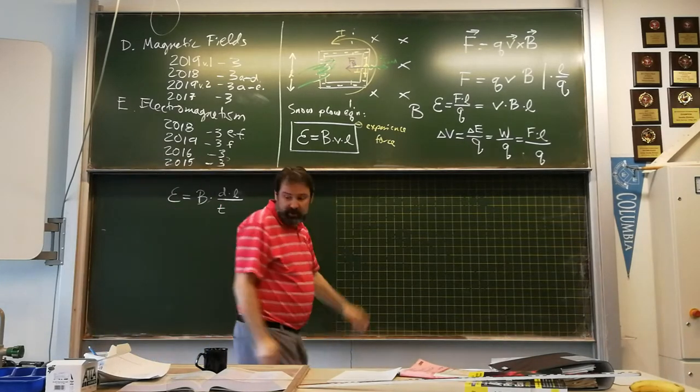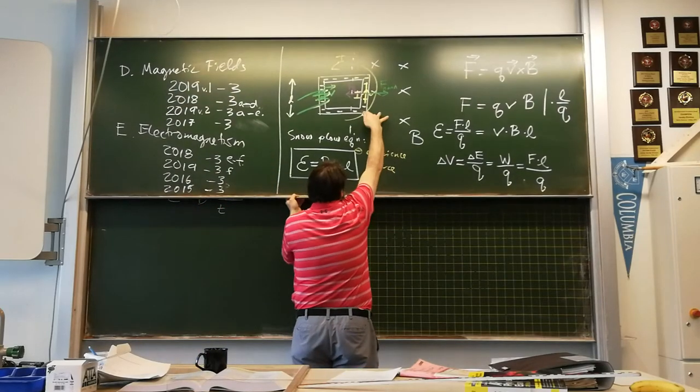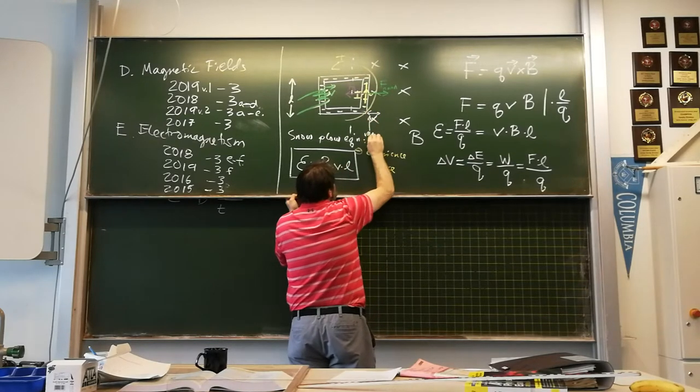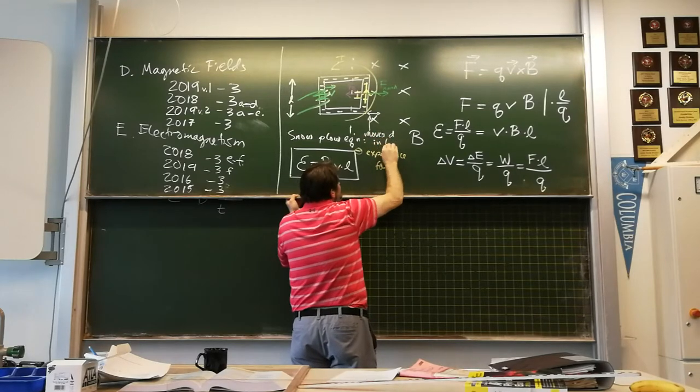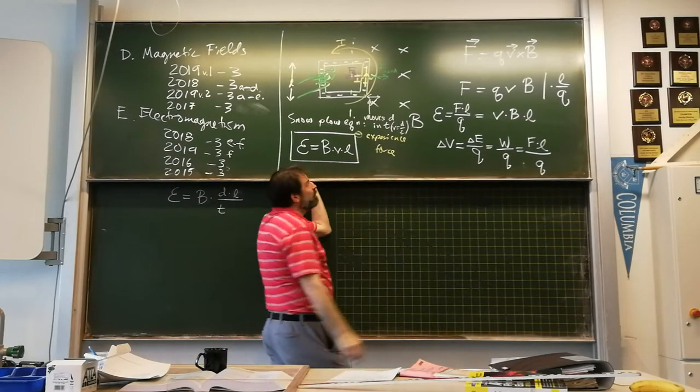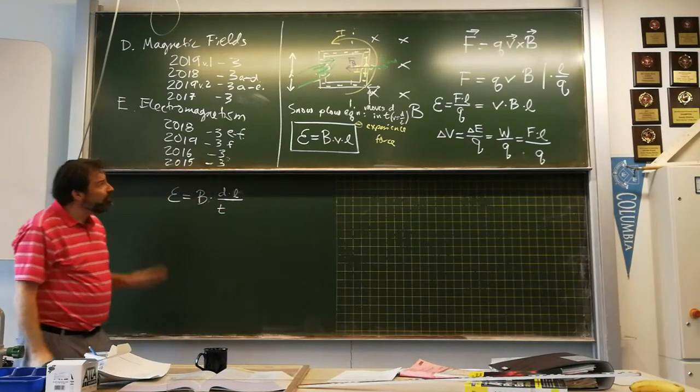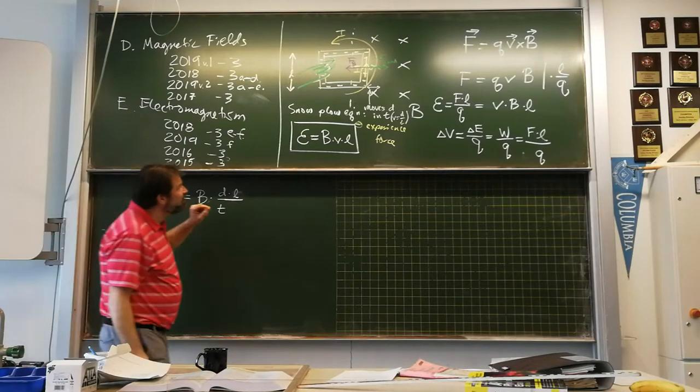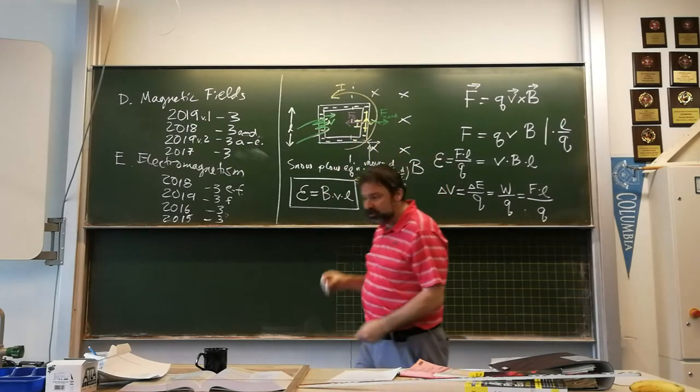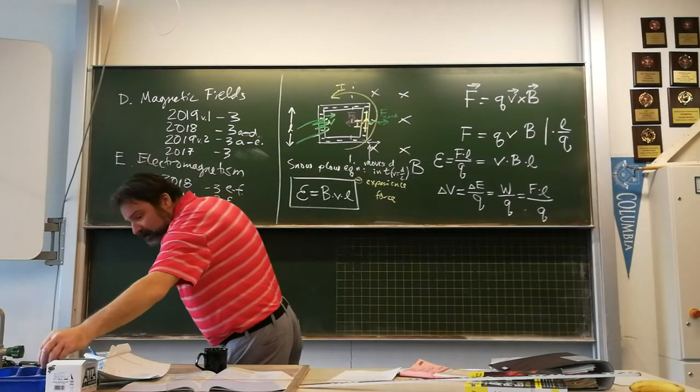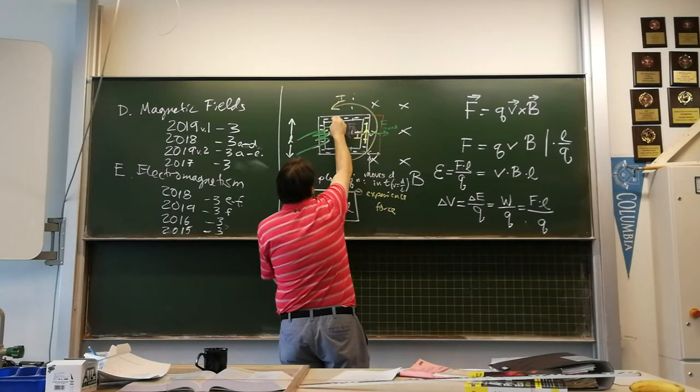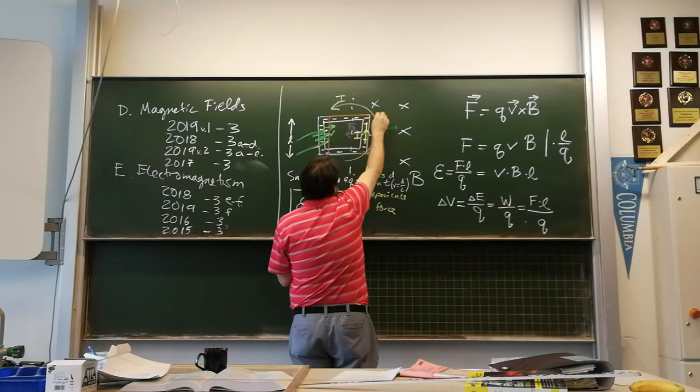So in a certain amount of time, our snowplow moves to the right a certain distance D. So this would be a distance D. Moves D in T. That makes sense. And of course it must be true that V is equal to D over T if it is a constant speed. But that means that when we move it to the right, we move it a certain distance D over to the right. So when we move from this position over to the right position, so that's the initial position, and a little while later, our wire is here.